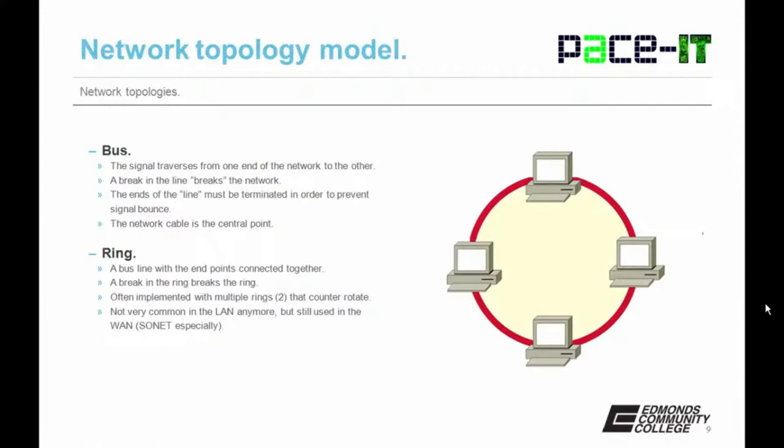Kind of related to the bus is the ring — it's a bus line with the endpoints connected together. A break in the ring breaks the ring. In a ring topology, it's common to use two rings that counter rotate, which safeguards against a break in one ring bringing down the whole network. Ring topologies are not very common anymore in the LAN, but they're still used in the wide area network, especially when SONET or SDH is used.